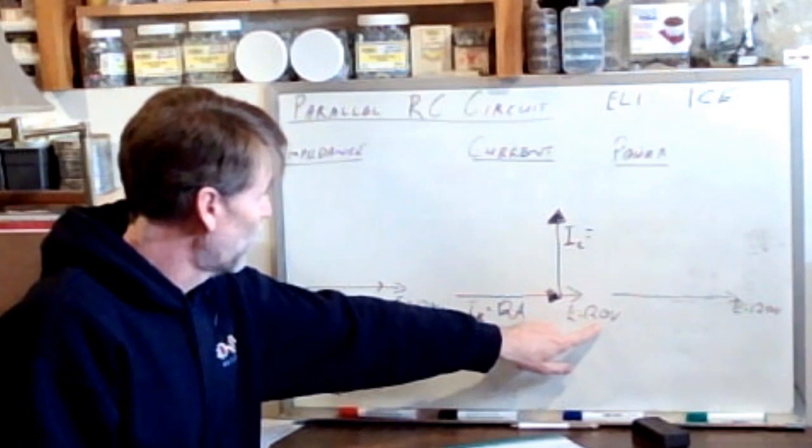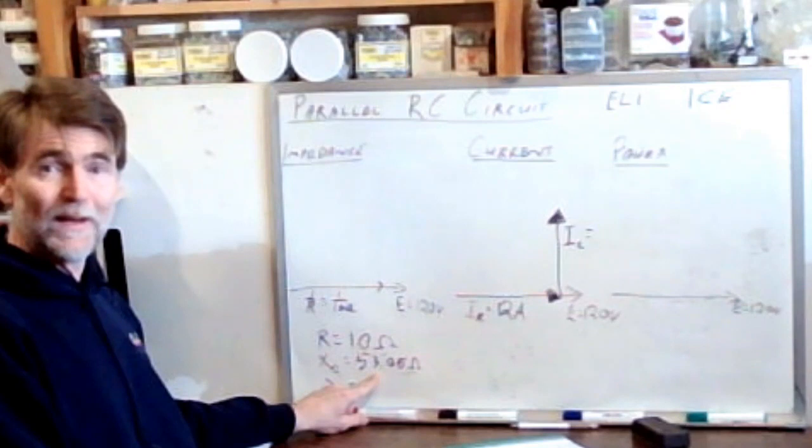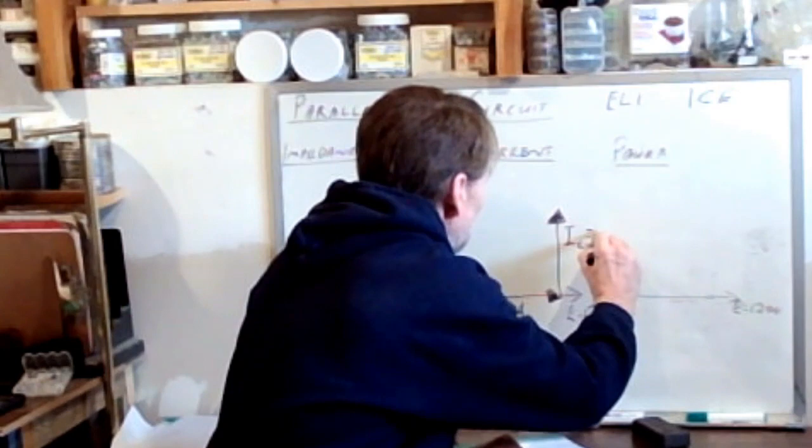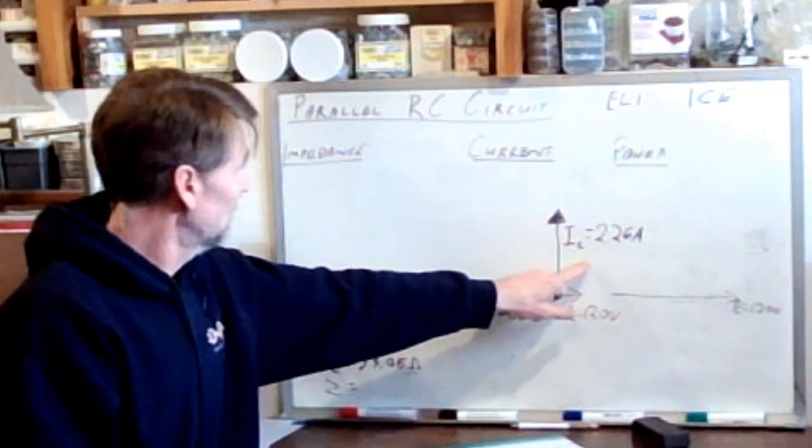Same way we found IR, we know the voltage and we know the capacitive reactance, we can calculate the current through the capacitor. So it's 120 volts divided by the 53 ohms gives us 2.26 amps. There's the current through the capacitor.